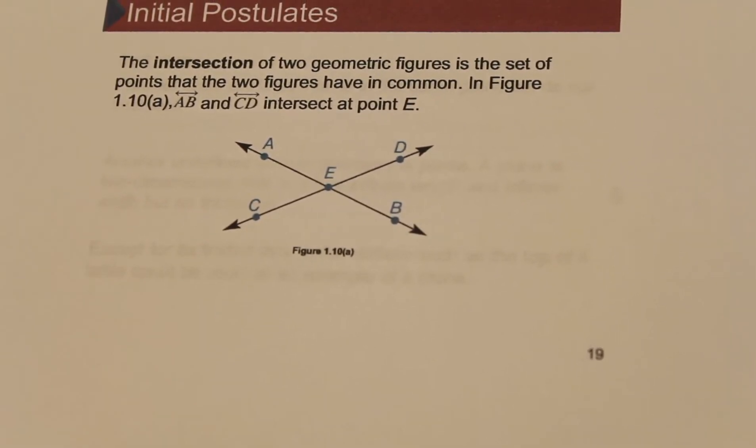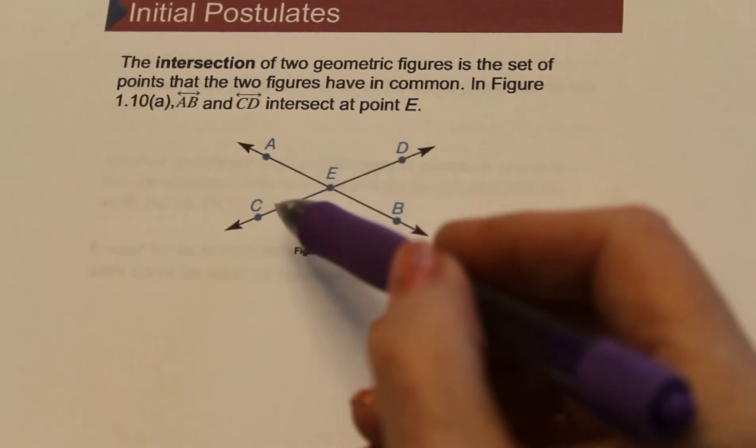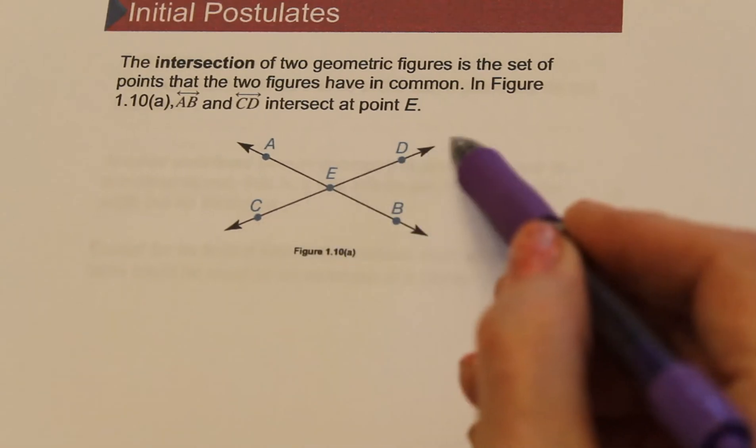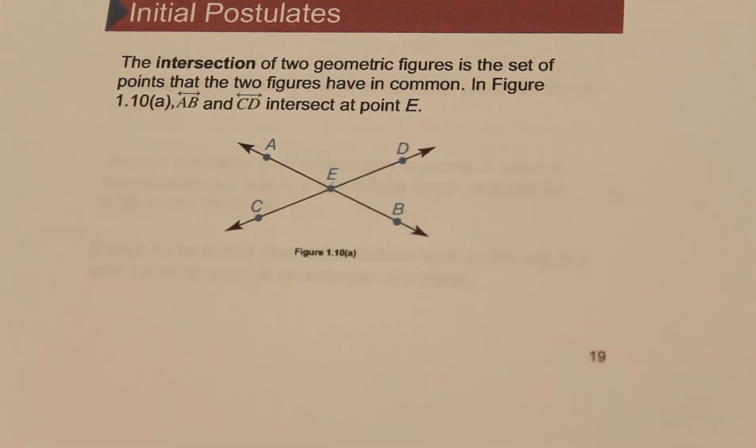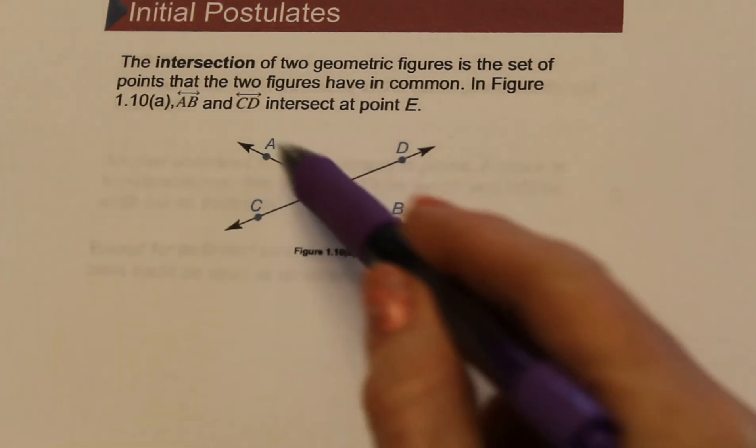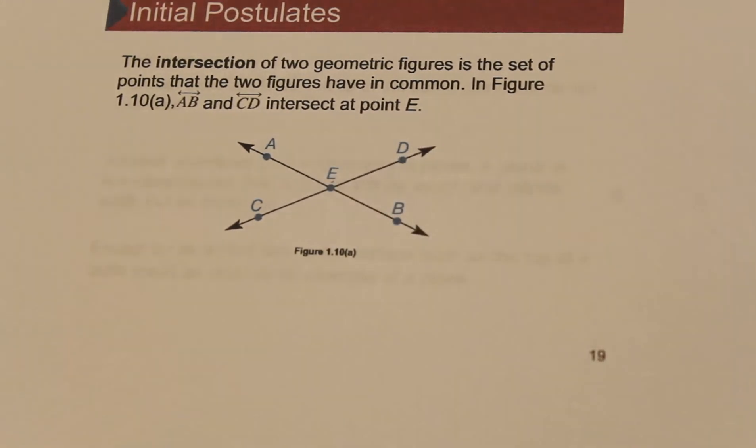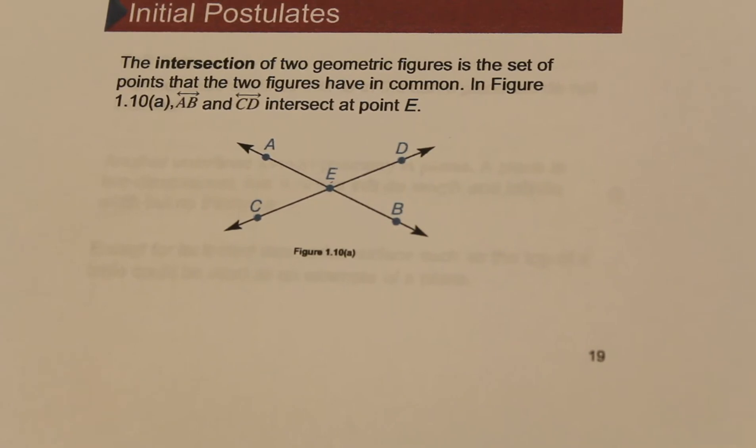So let's talk about intersection. We've talked about intersection with sets, but now we're getting into intersection for geometric shapes. The intersection of two figures is the set of all the points that are in both figures. So in this particular case, here's line CD and point E is on line CD. Here's line AB, but point E is on line AB. So we would say the intersection of those two lines is the point E.